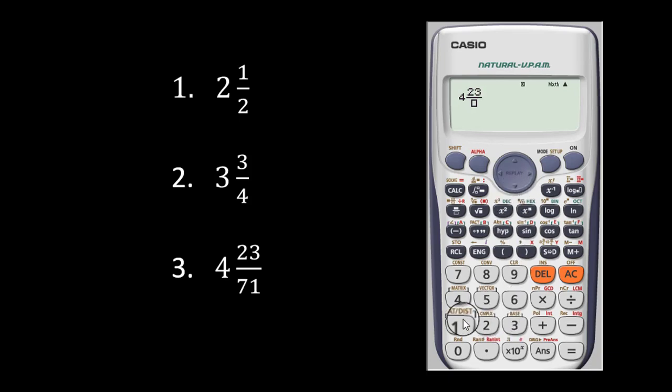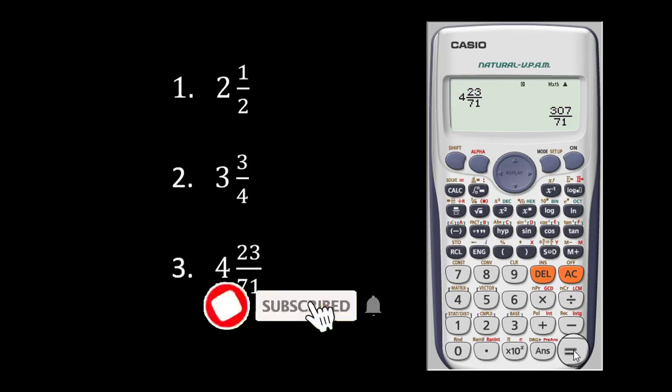Then you scroll down. And then you key in 71. Then you press equal to. This is how easy it is when it comes to converting mixed fractions to improper fractions.